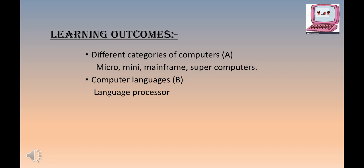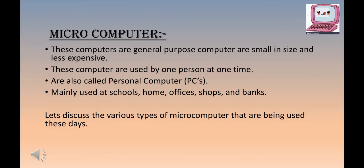Let us discuss the different types of computers. The first is the microcomputer. These are general-purpose computers that are small in size and less expensive. They are used by one person at one time. The very common example is a PC — personal computer — which we generally use at school, in our homes, offices, shops, and banks. That is why it is known as a personal computer, because only one individual can use it at one time.